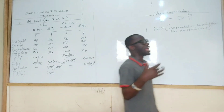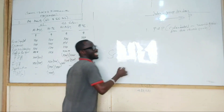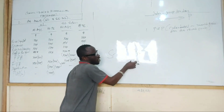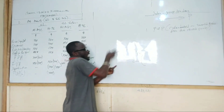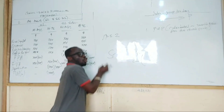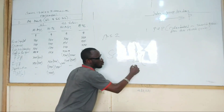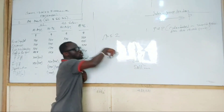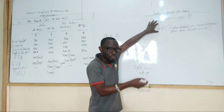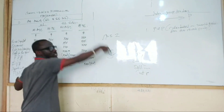Now why is it called provision for unrealized profit? If the subsidiary has sold to the parent and the parent has not finished selling all of them, that means in the closing inventory of the parent they have the inventory there. But according to IAS 2, inventory should be carried at the lower of cost or net realizable value. They are carrying the asset at the selling price when they should carry it at the cost price. For that reason we need to calculate the provision for unrealized profit.